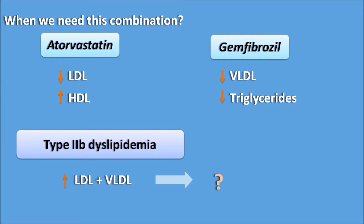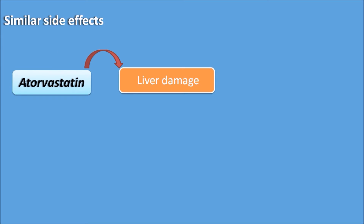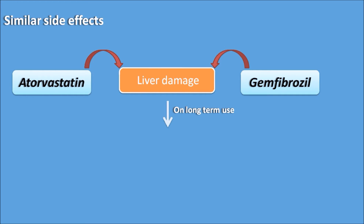In such situations we can use statins as well as fibrates, but this combination has its own disadvantages. Both atorvastatin and gemfibrozil produce liver damage. When these two drugs are used in combination for long-term use, they can produce liver failure. This liver failure can also lead to kidney failure, with important symptoms such as yellowish discoloration of the skin, fever, fatigue, and red-colored urine.